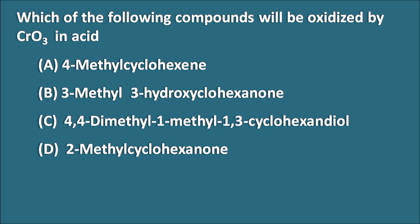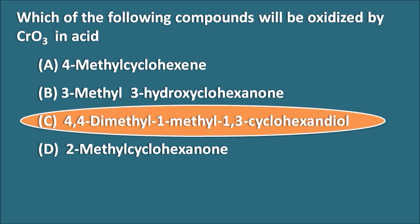The second question: which of the following compounds will be oxidized by chromium trioxide in acid? The options are 4-methylcyclohexane, 3-methyl-3-hydroxycyclohexanone, 4,4-dimethyl-1,3-cyclohexanediol, and 2-methylcyclohexanone. The right answer is option C.